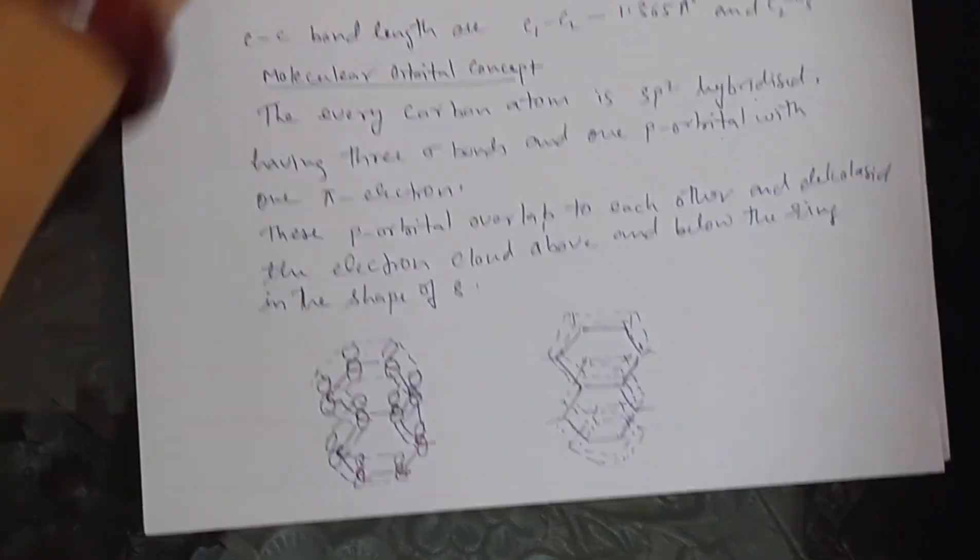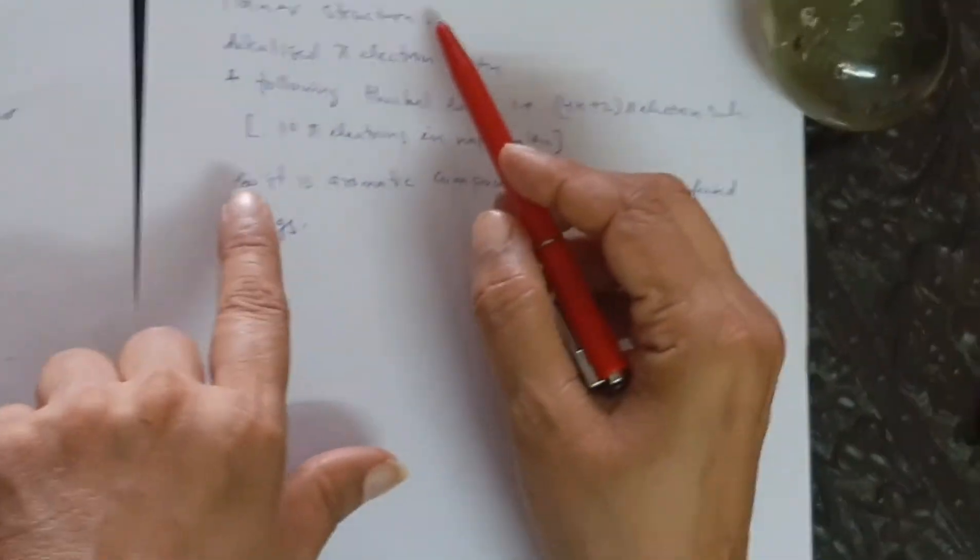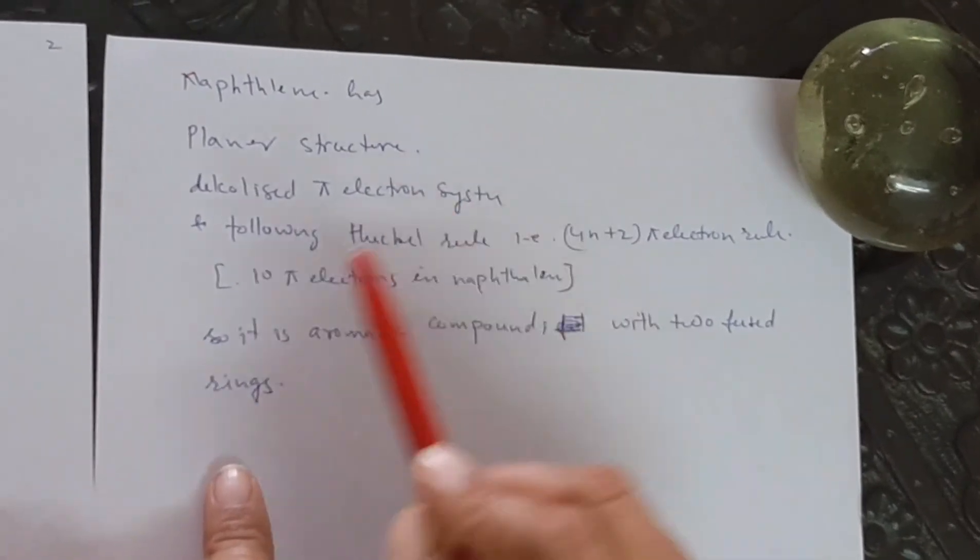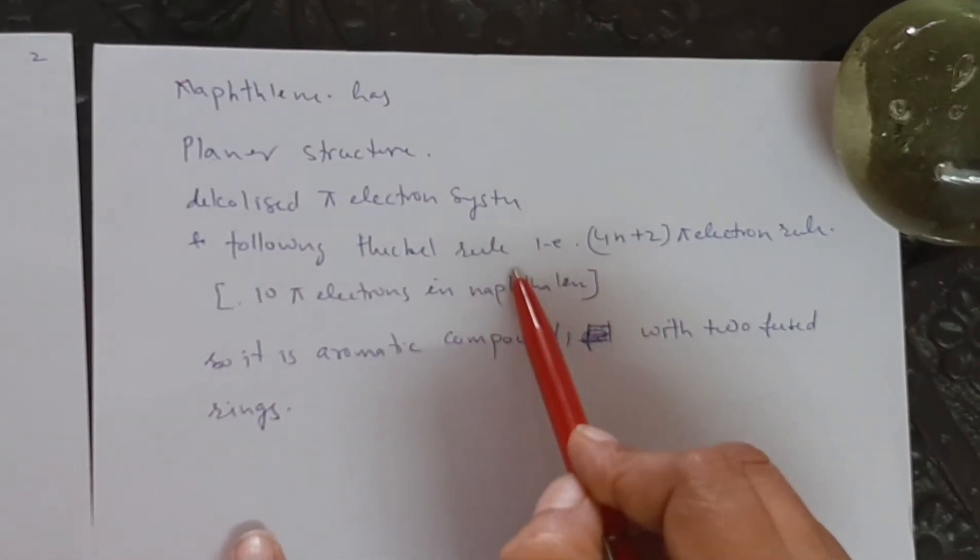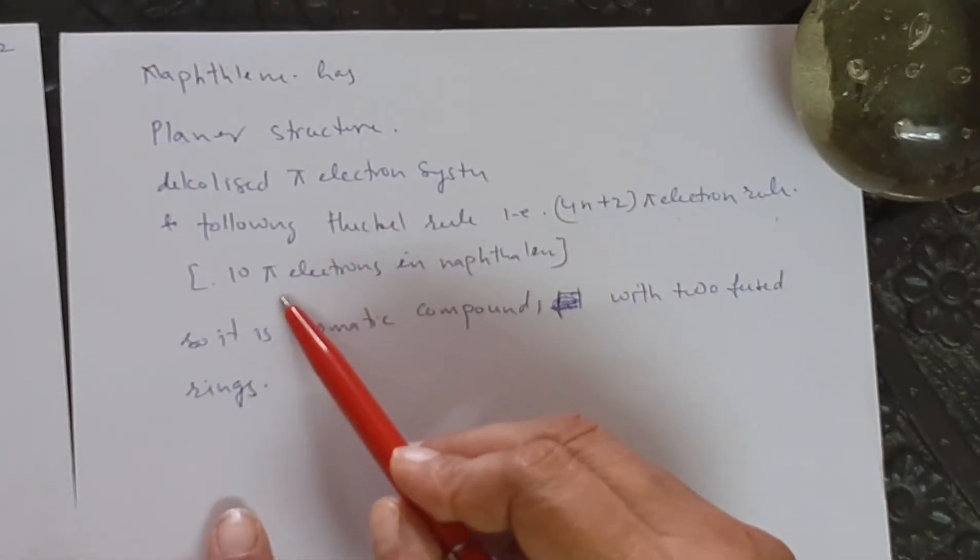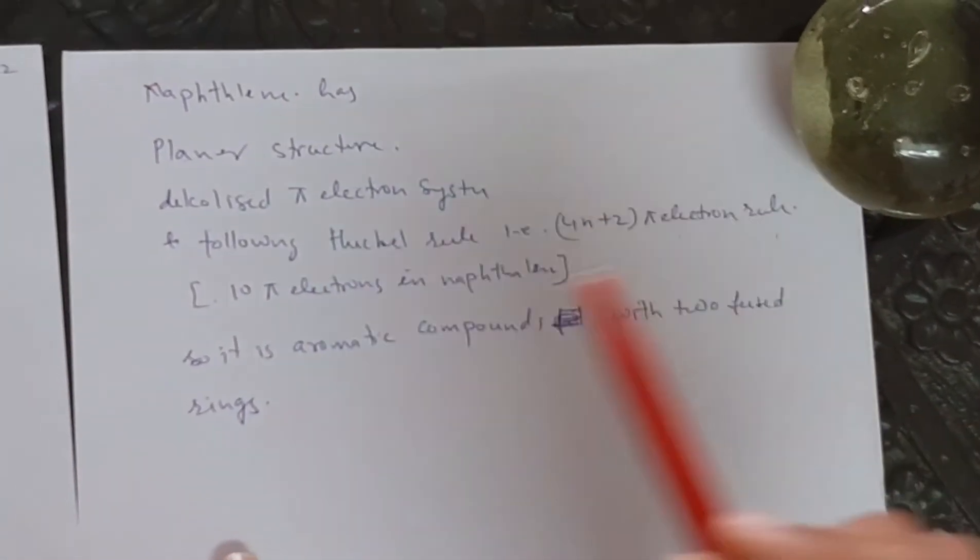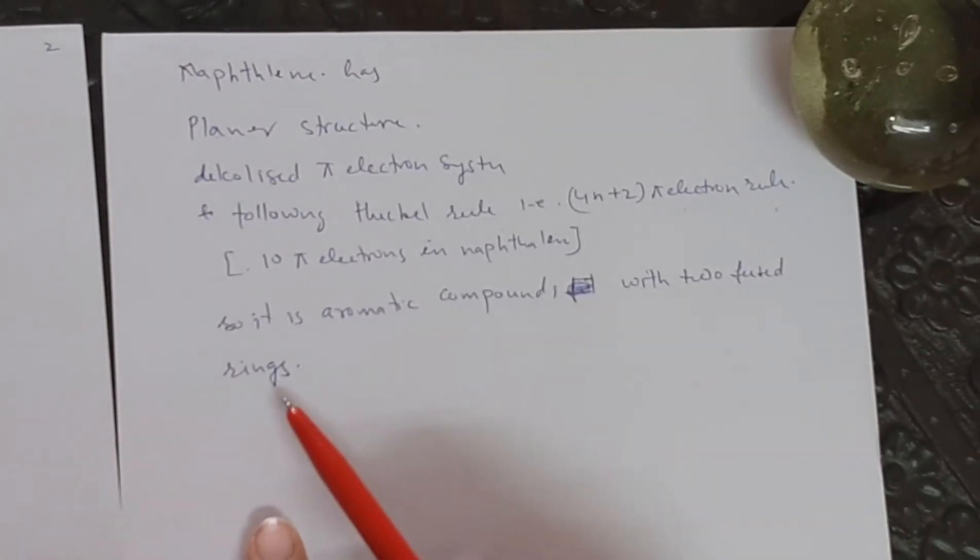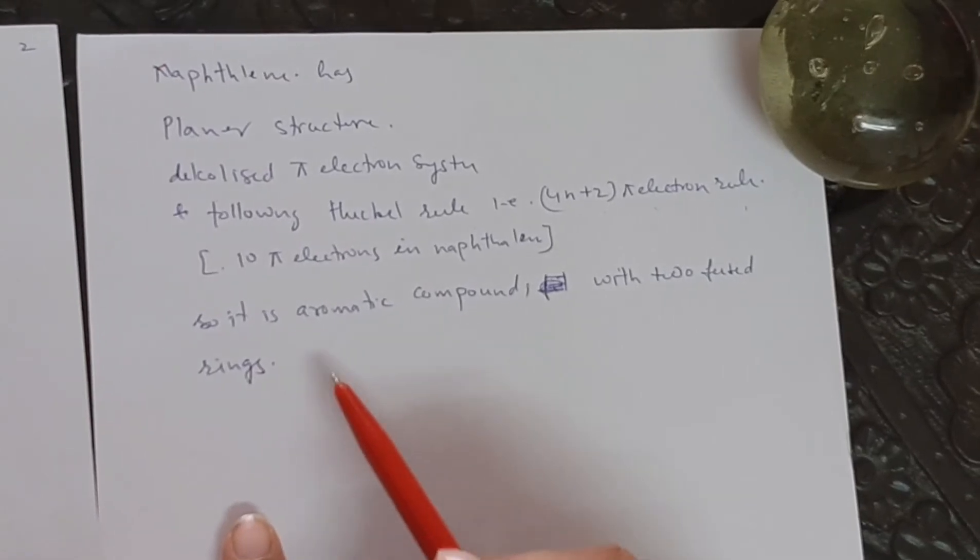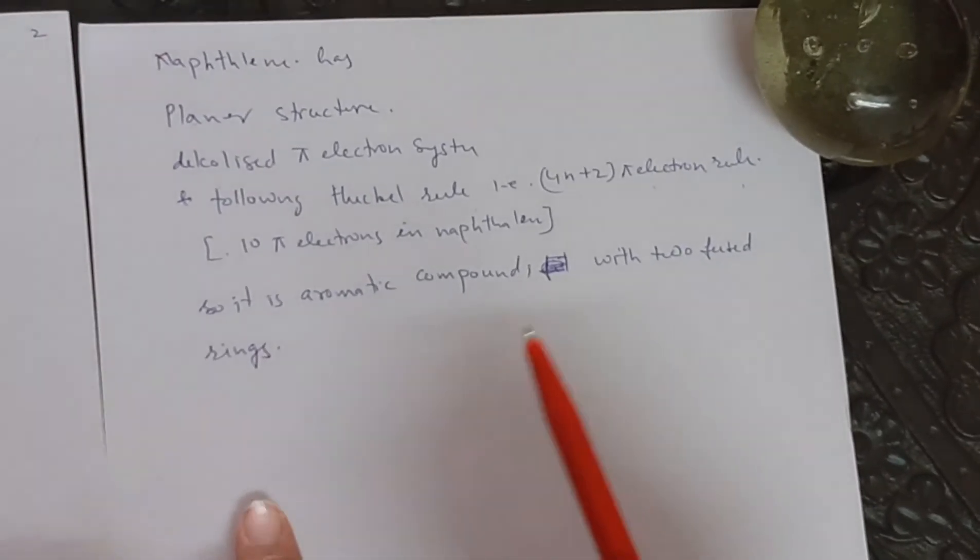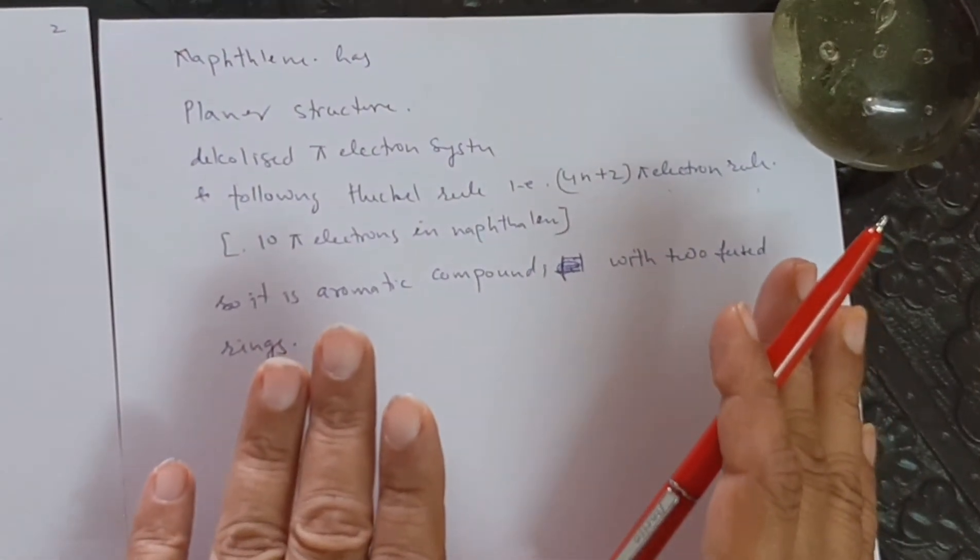So, the naphthalene has a planar structure, has delocalized pi electron system, also following the Huckel rule that is 4n plus 2 pi electron rule. It is because it is having 10 pi electrons. So it is an aromatic compound with 2 fused benzene-like rings at 1 and 2 position or ortho to each other. So this is all about the structure of naphthalene.